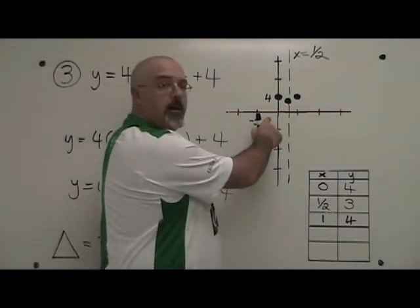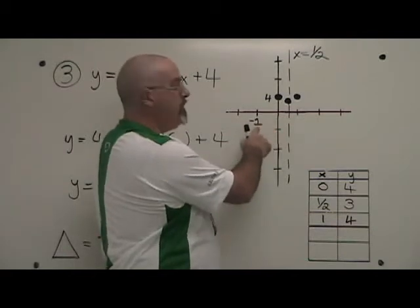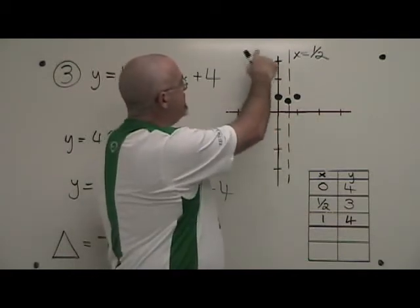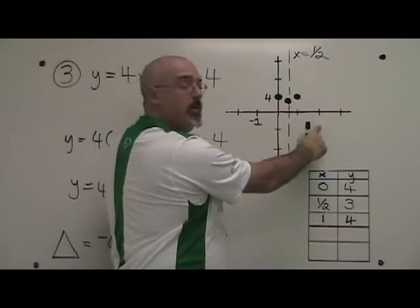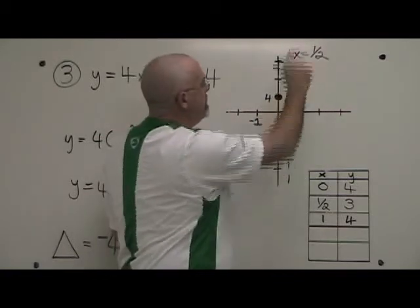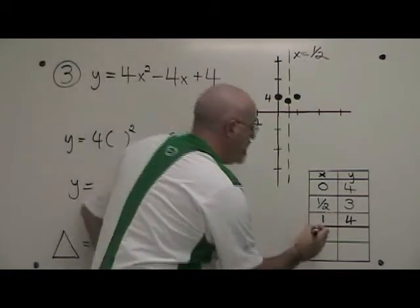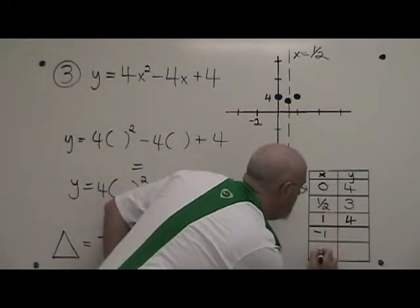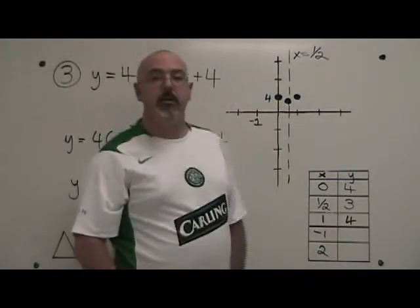We look on our graph and we see that having a point where x equals negative 1 should give us something around here. Having a point where x equals 2 should give us a point up around here. So I am going to try putting negative 1 and 2 as x values into my equation.